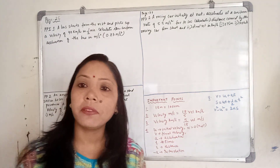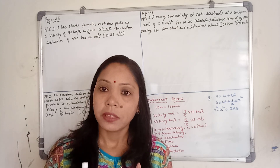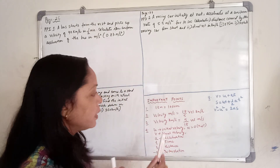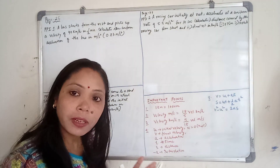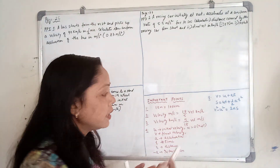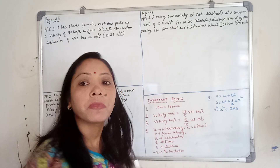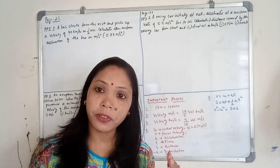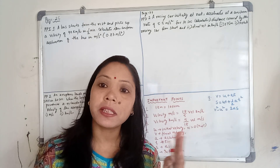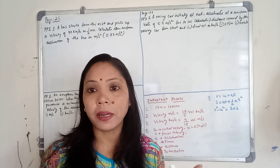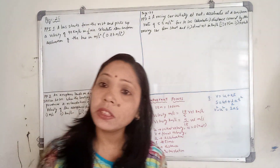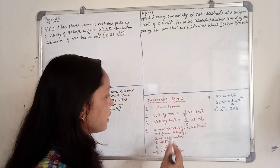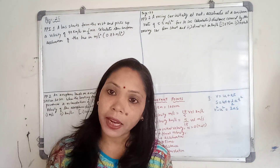If you want to convert meters per second into kilometers per hour, multiply the given velocity by 18/5. Similarly, if you want to convert kilometers per hour into meters per second, multiply by 5/18.